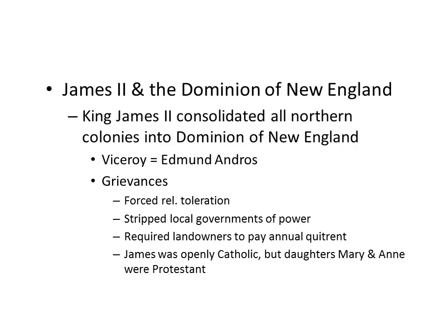While Charles II had tried to establish new colonies — some captured from other European rivals, some newly founded — and used those colonies to reward his supporters, James II is going to go in a different direction when he takes control after his brother's death. What James is going to do is consolidate all of the northern colonies into what he calls the Dominion of New England and put it under a single viceroy. In doing this, he creates a lot of grievances with the colonists. In particular, the new colony required religious toleration, stripped local governments of all power, and forced landowners to pay taxes.